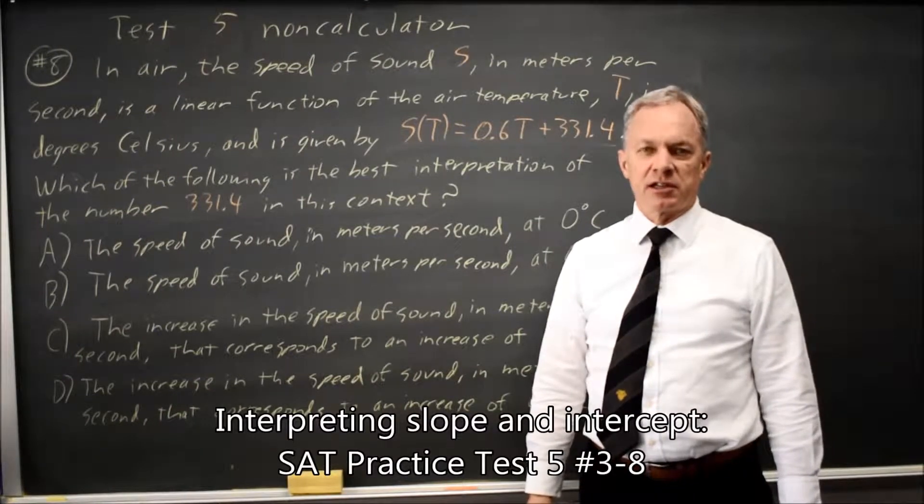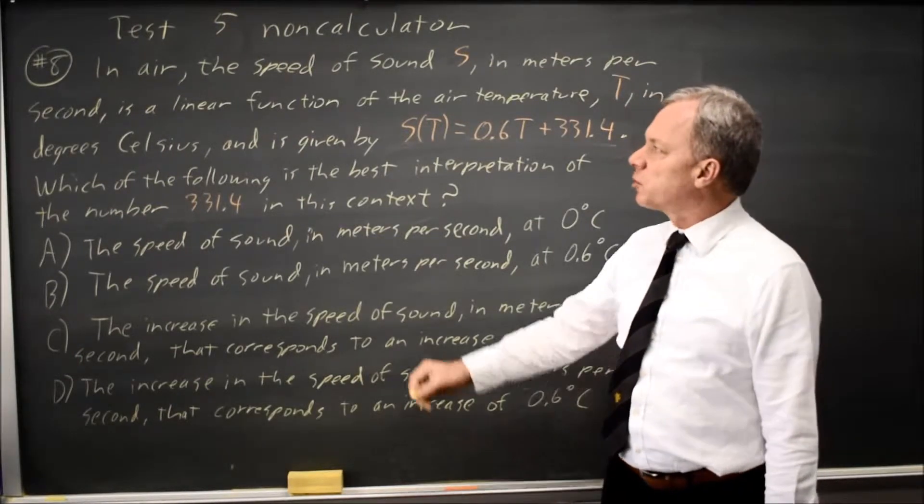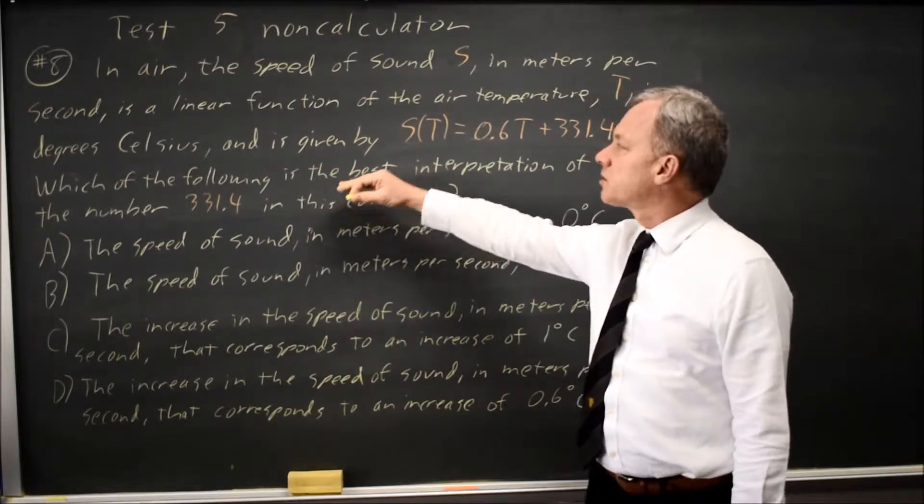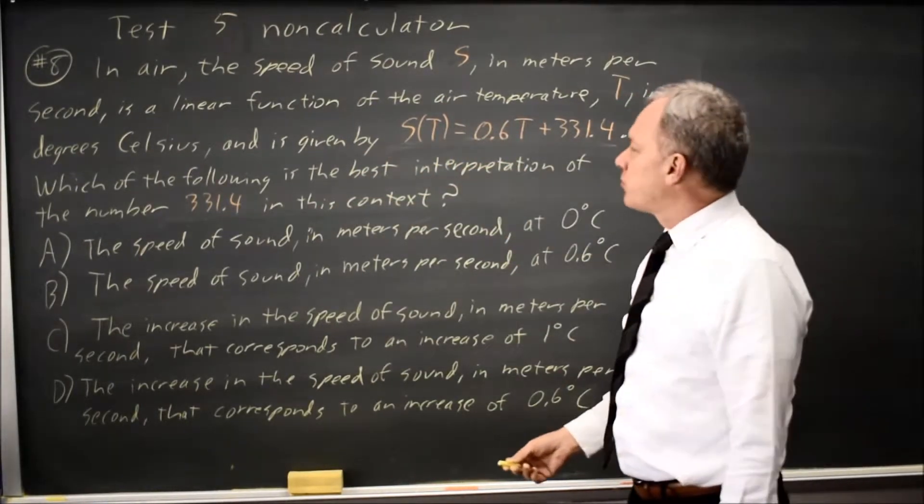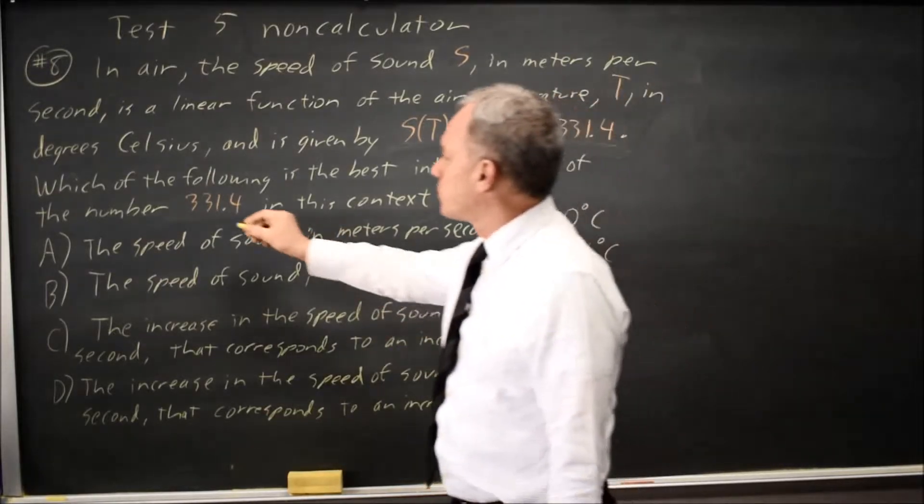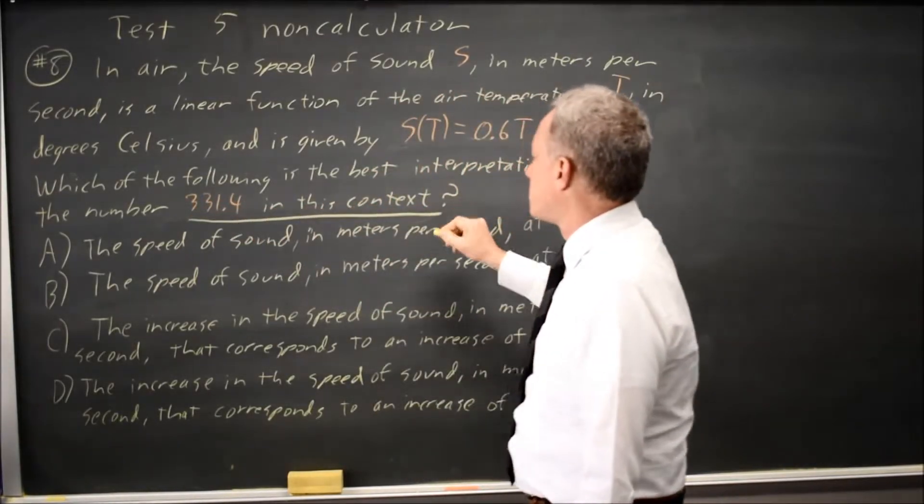This is SAT test 5, non-calculator question number 8. The College Board gives us a paragraph that describes a linear expression in context and asks which of the following is the best interpretation of the number 331.4 in this context.